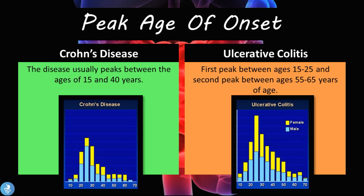Now let's talk about the peak age of onset. In Crohn's disease the disease usually peaks between the ages of 15 and 40. In ulcerative colitis there are two peaks: the first appears between ages 15 and 25, and the second peak appears between ages 55 and 65.